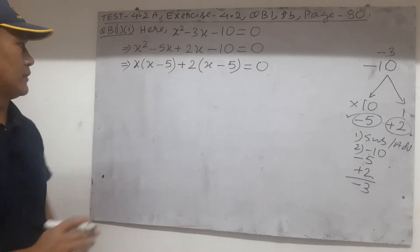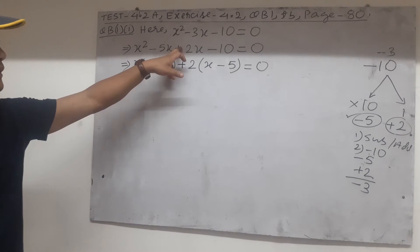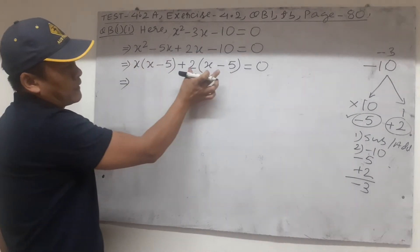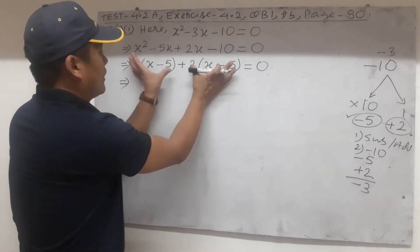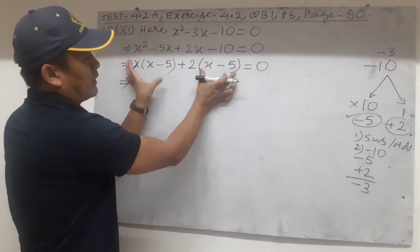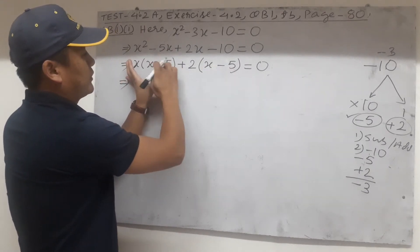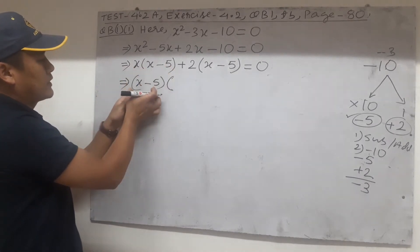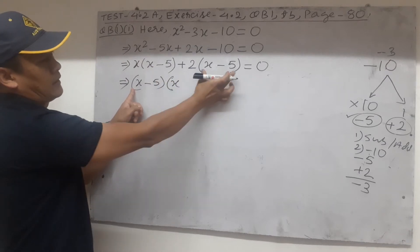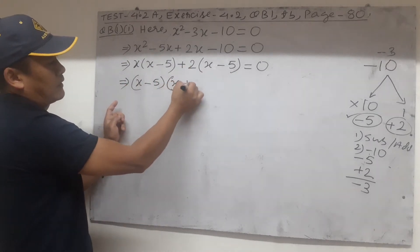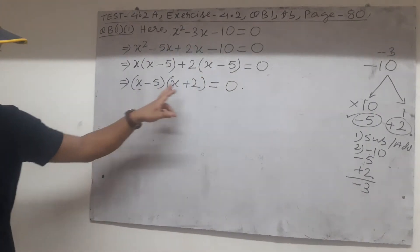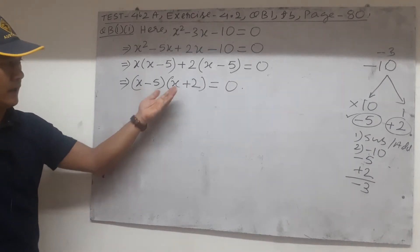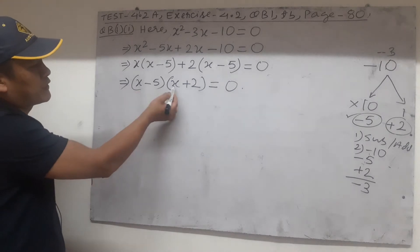These two highest common factors have been taken out. Now we have x(x minus 5) plus 2(x minus 5). Consider this as two terms: x into (x minus 5) is one term, 2 into (x minus 5) is one term, with a plus sign between them. The common factor is x minus 5. So take x minus 5 outside the bracket. Inside the new bracket will be x plus 2. So (x minus 5)(x plus 2) equals 0. This is called factorization.